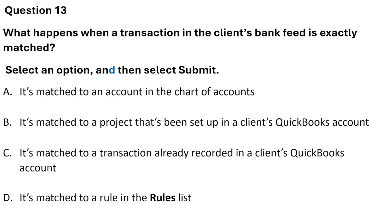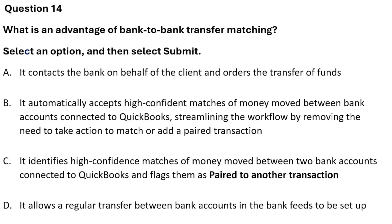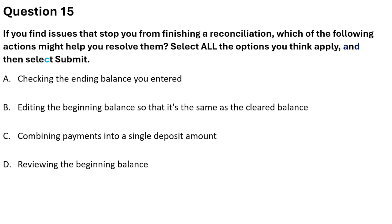Question 13: What happens when a transaction in the client's bank feed is exactly matched? Options: it is matched to an account in the chart of accounts; it is matched to a project set up in the client's QuickBooks account; it is matched to a transaction already recorded in QuickBooks; it is matched to a rule in the rules list. The correct answer is: it's matched to a rule in the rules list. Question 14: What is the advantage of bank-to-bank transfer matching? The correct answer is option C: it identifies high-confidence matches of money moved between two bank accounts connected to QuickBooks and flags them as paired transactions.